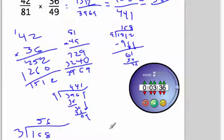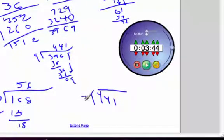441 divided by 3. Holy smokes, this is taking a while. 3 goes into 4 one time, that's 3. Bring down the 4.